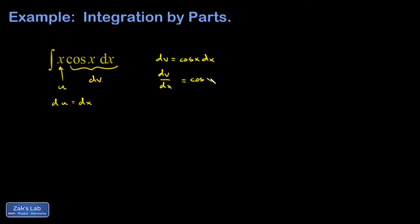In other words, the derivative of v is the cosine function, so that means v must be the sine function. In practice, though, you just look at this piece of dv and go, what's the antiderivative of it? So it's the sine function.